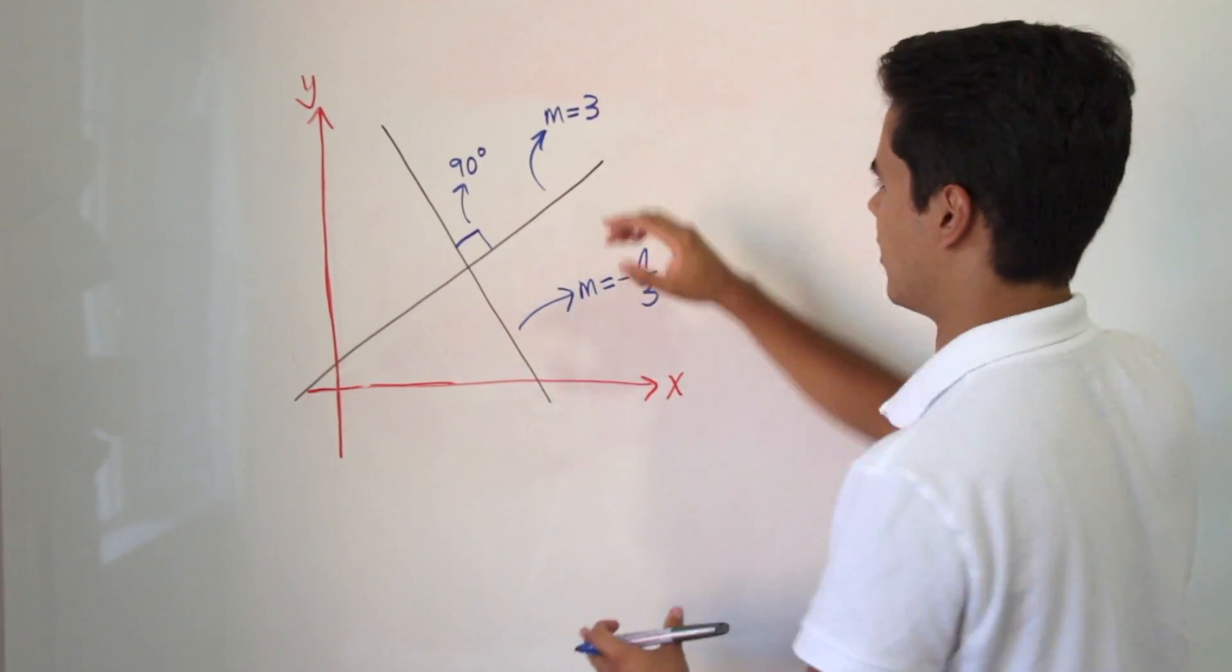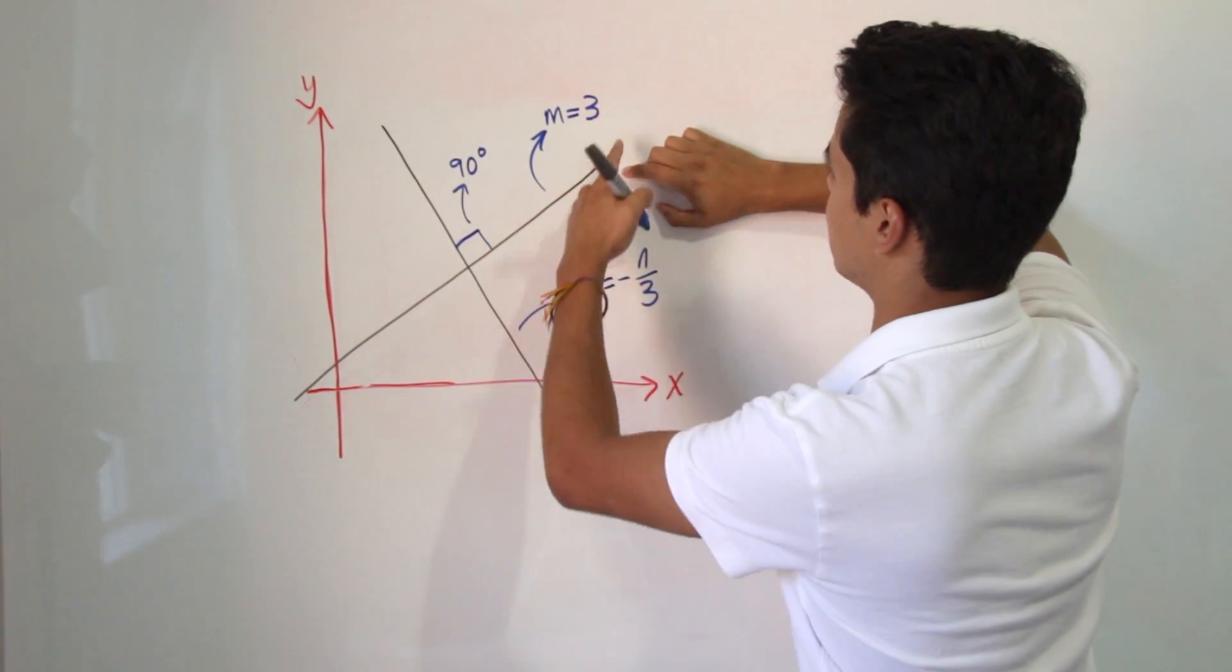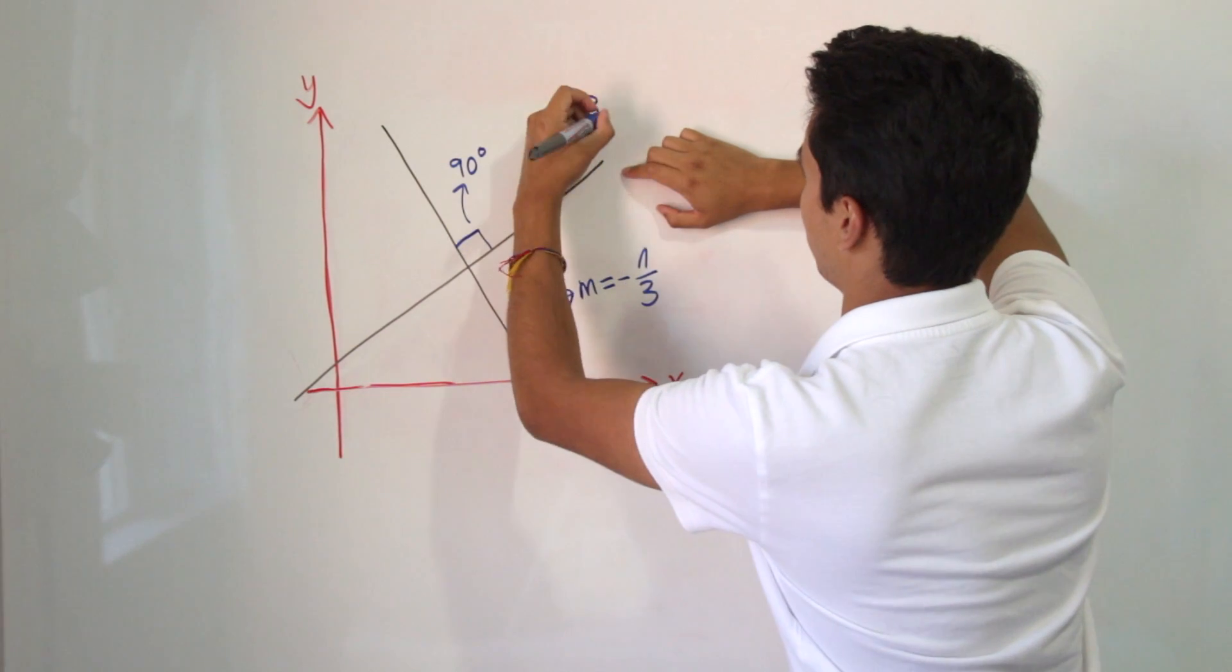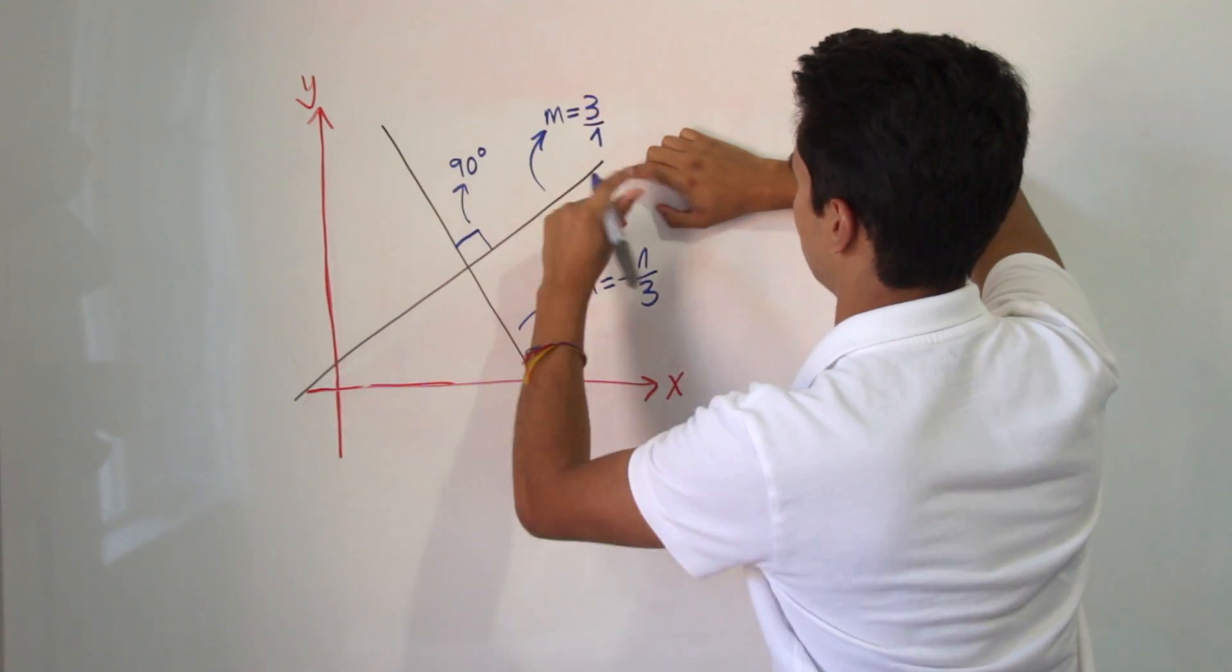Now going back to our example, we have this line and it has a slope of 3, but let's remember that this 3 is on top of an imaginary 1. So there's a 1 here.